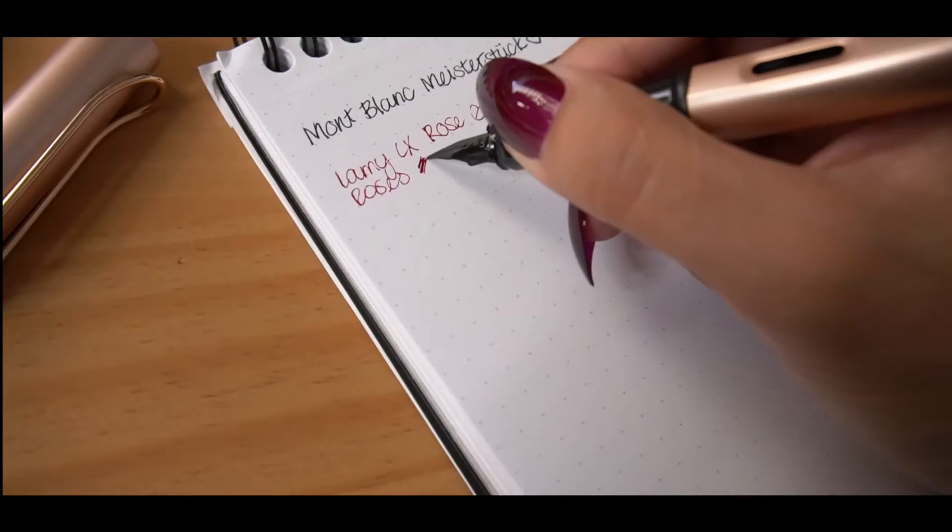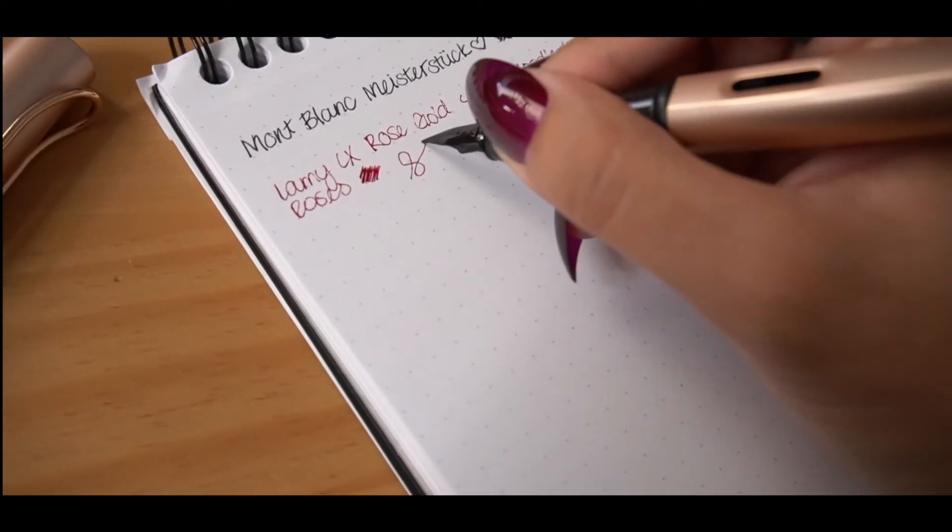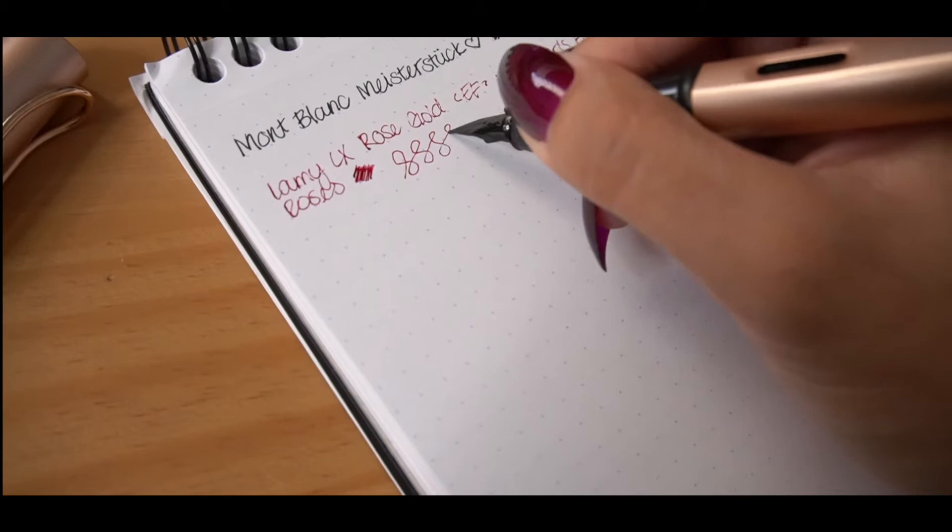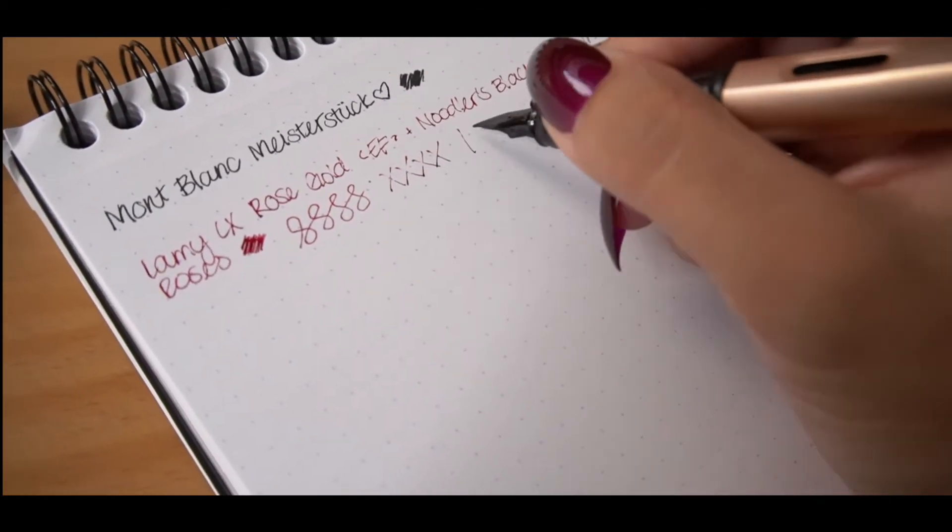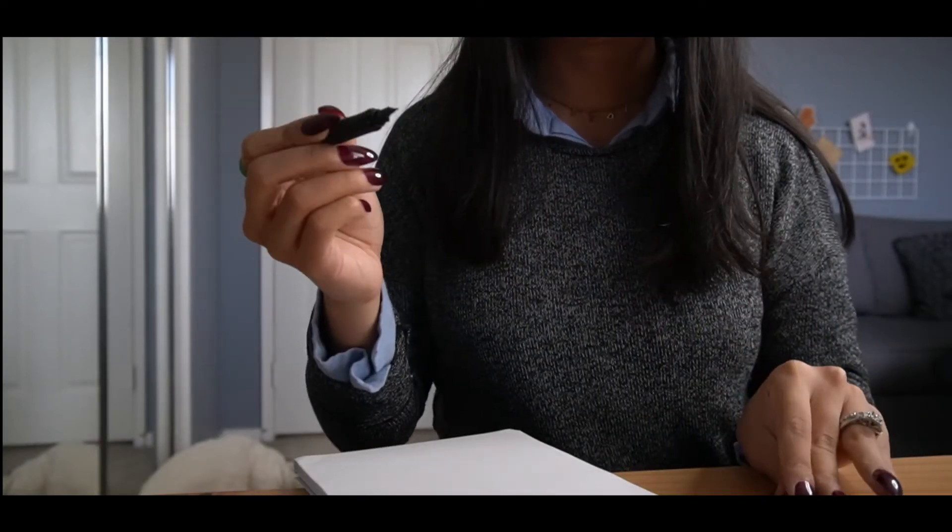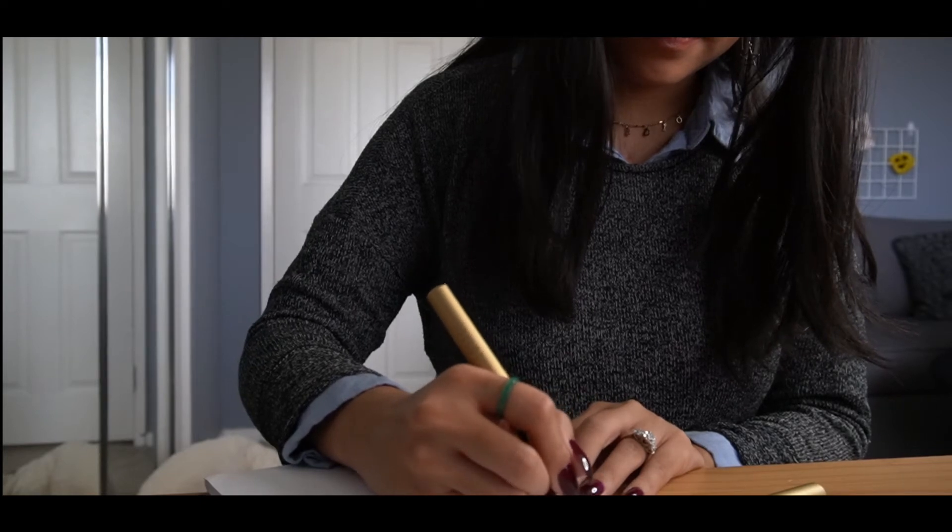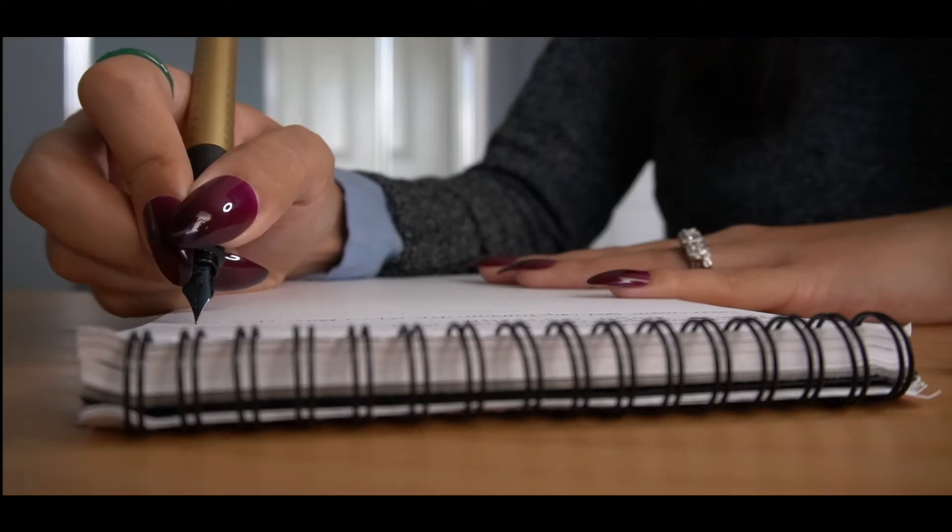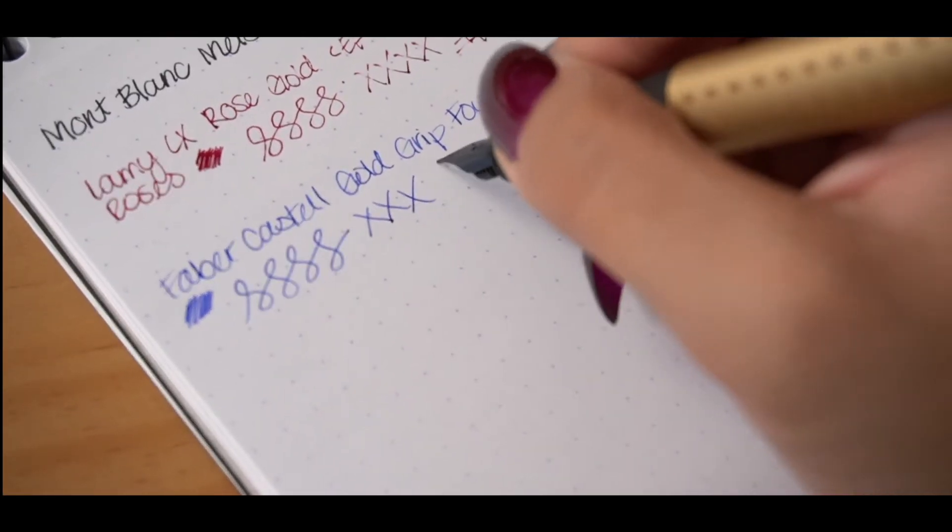The first type is a cartridge converter fountain pen. True to its name, these fountain pens are able to use ink cartridges that you can pop in to start writing right away, or converters specially designed to draw ink from ink bottles. Using ink cartridges can be very convenient and are great if you're just starting out in the hobby, while using converters can open up a whole new world of colors that you can use in your fountain pen.